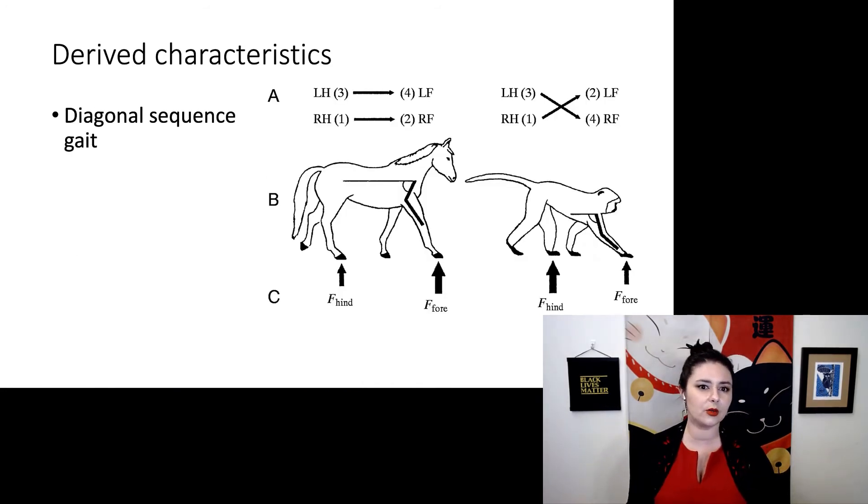The next one is a little bit weird. We have something called a diagonal sequence gait. So you can see here our horse, they move the left side first, then the right side. But in primates, we have a different pattern. We first move with a right leg, then go to a left limb, then back to the right, and then to a left limb again. This method of climbing is really good when you need to walk on a very thin rope, similar to a tight rope. So we think the very first primates may have been foraging on the ends of branches. We call this terminal branch foraging.